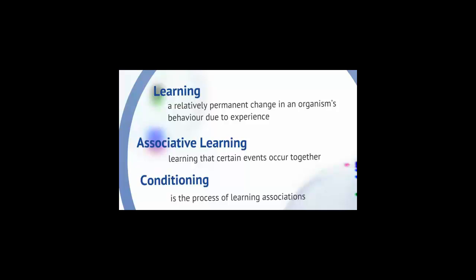Thus we call this type of learning associative learning. There may be two stimuli, as in classical conditioning, or a response and its consequences, as in operant conditioning. Conditioning is the process of learning these associations.